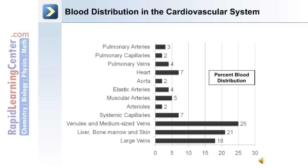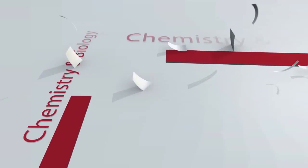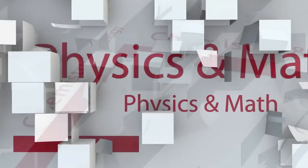The largest percent distribution of blood is in the venules and medium-sized veins, closely followed by the liver, bone marrow, skin, and the large veins of the body. The least is found in the pulmonary capillaries, the aorta, and the arterioles.